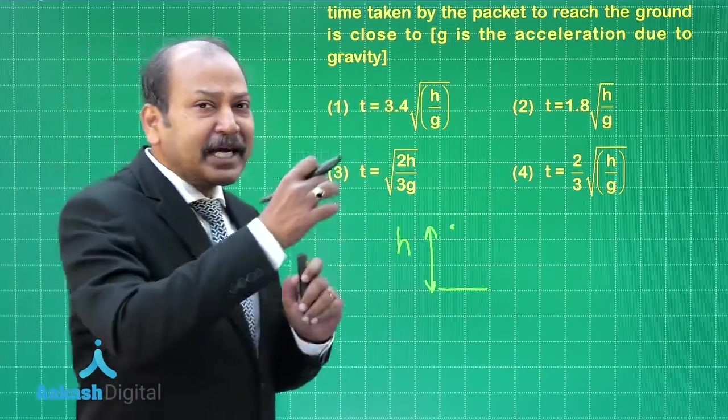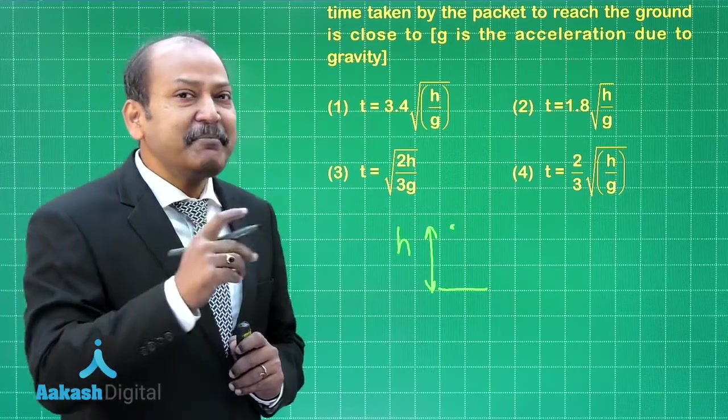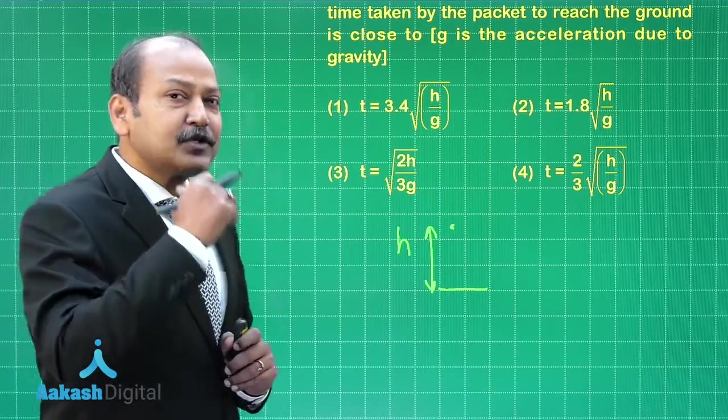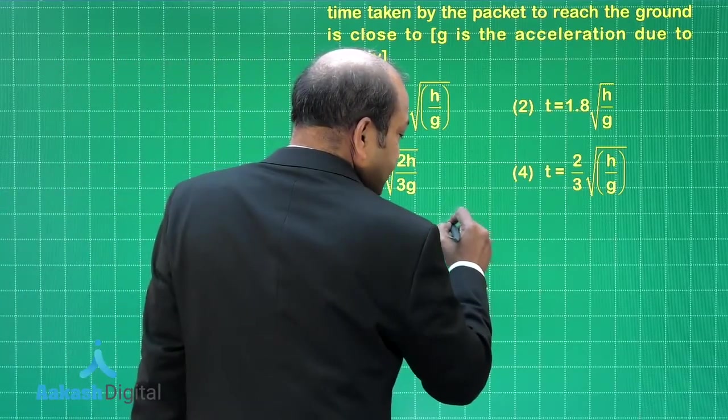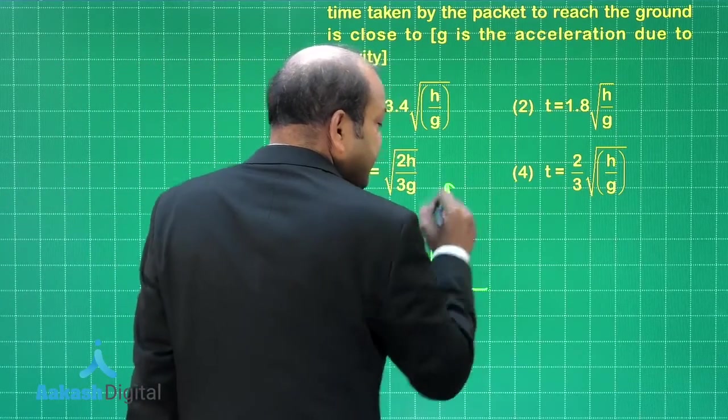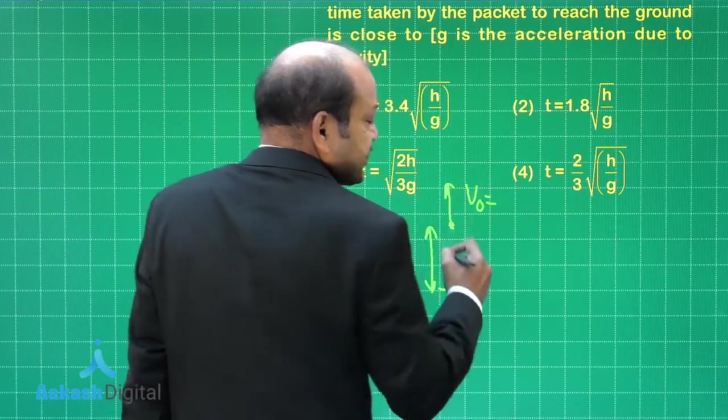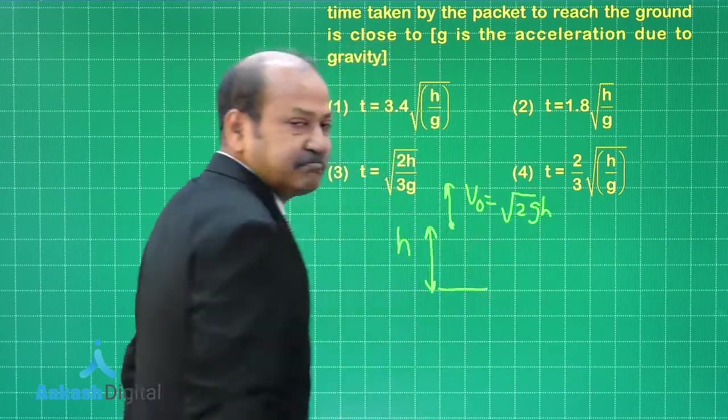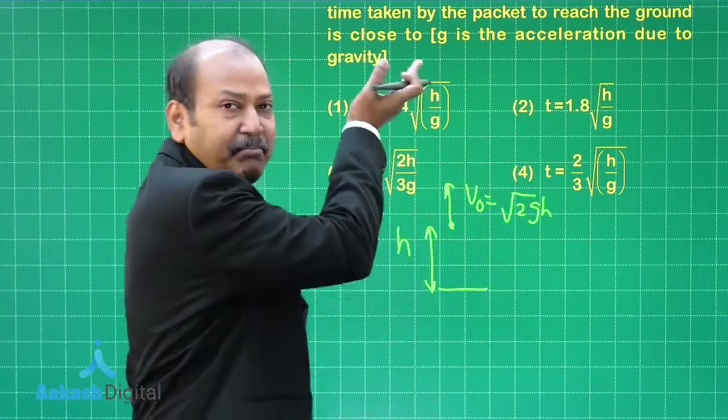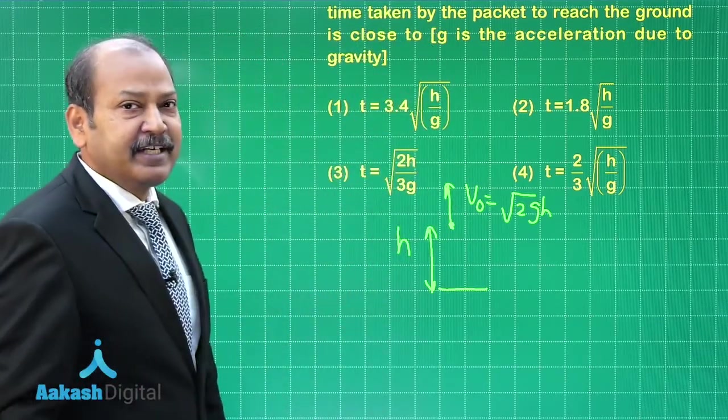When the food packet is dropped from the helicopter, its initial velocity will be same as the velocity of the helicopter at that moment. So if I call the initial velocity of the food packet after being dropped as v_naught, then v_naught is root 2gh and the direction is upward. Initially it will go up and then finally it will come to stop and come back and hit the ground.